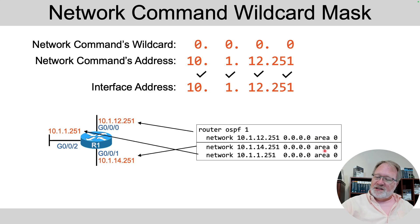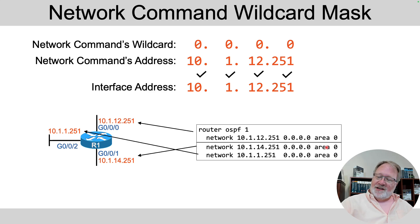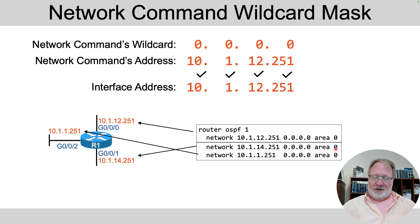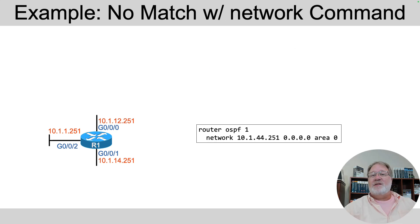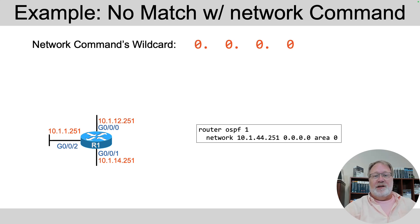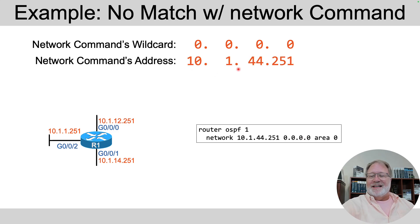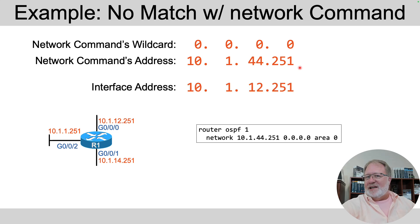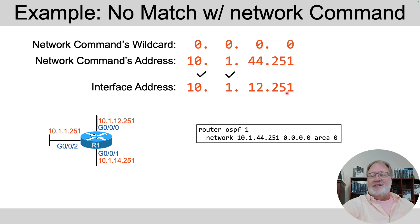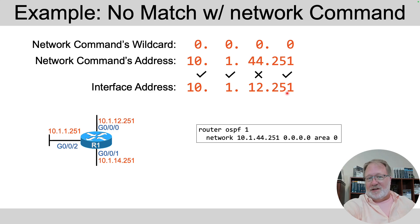Notice they all end in area 0. CCNA focuses on single area designs, meaning all the interfaces are in area 0. That's how you assign — not only enable OSPF on the interface — but how you assign it to a specific area. To emphasize: if you typed network 10.1.44.251 with an all-zeros wildcard mask, none of router R1's three interface addresses exactly match that, so that network command doesn't enable OSPF on any interface. For instance, comparing to the top interface 10.1.12.251, there's no match in the third octet.